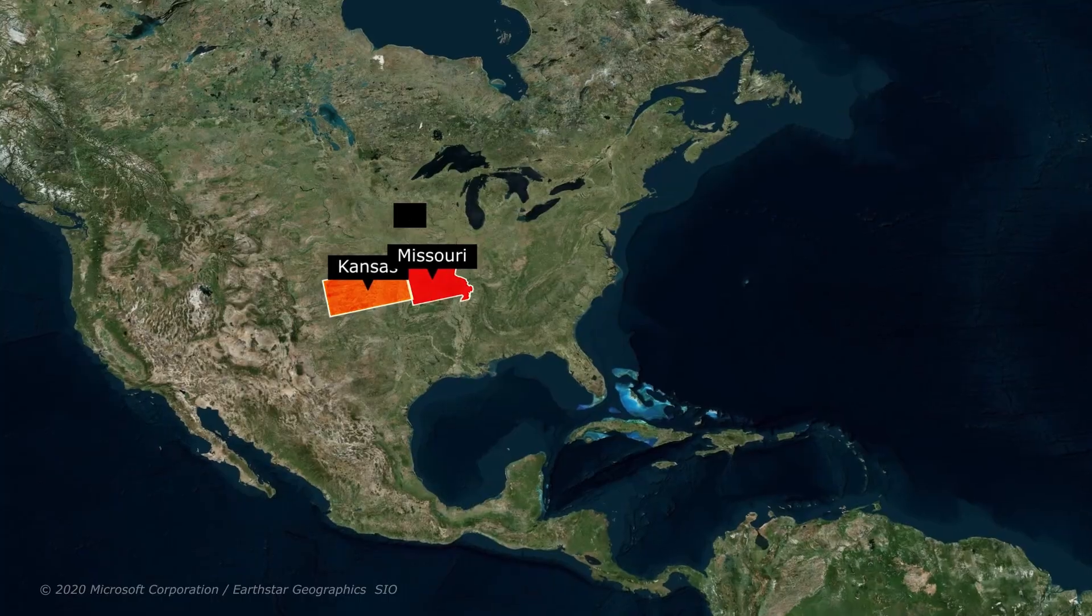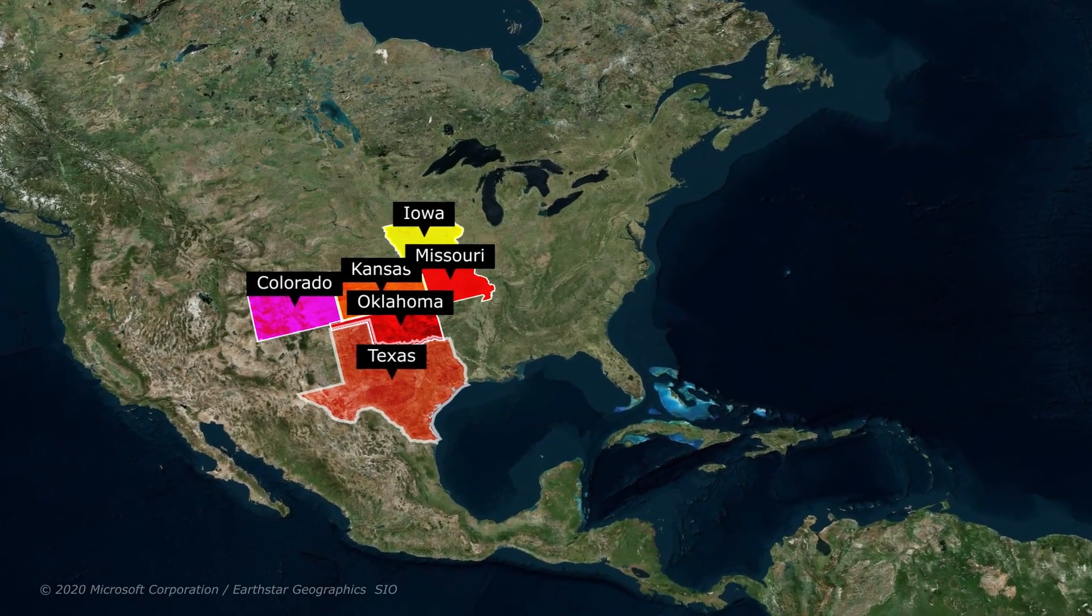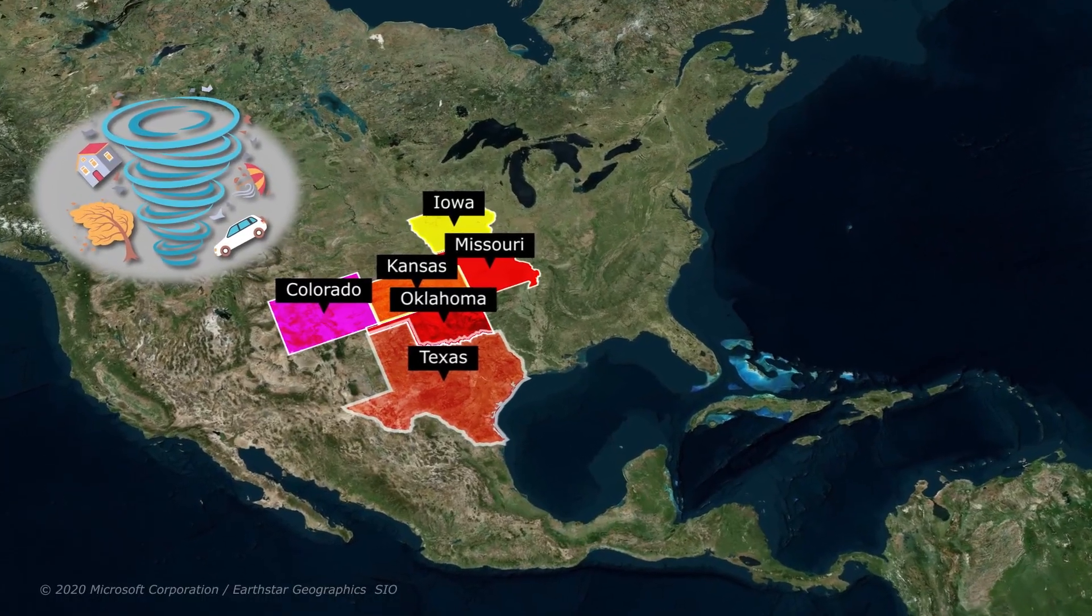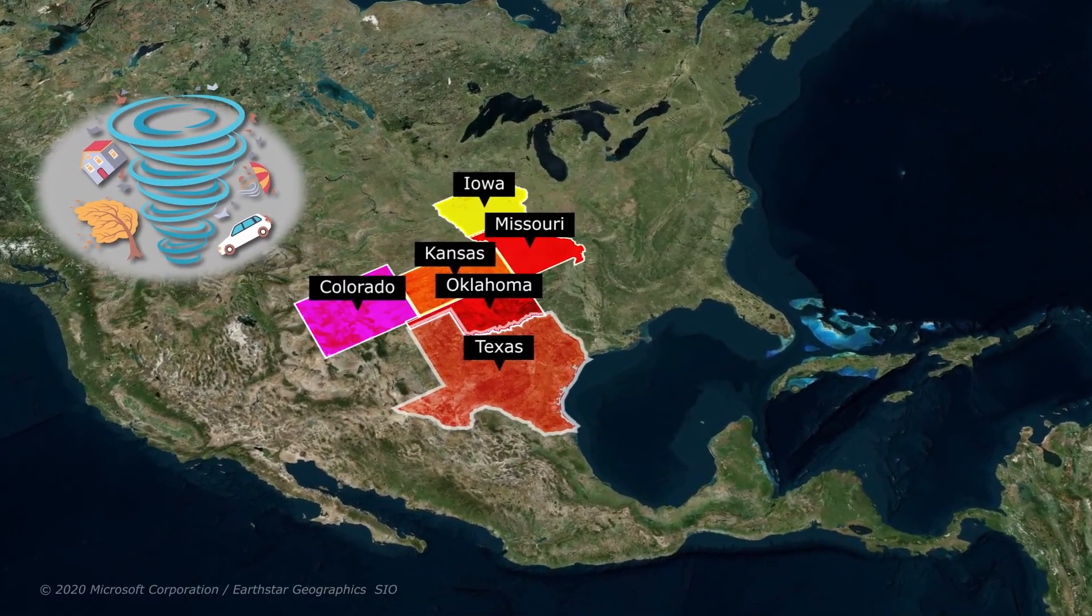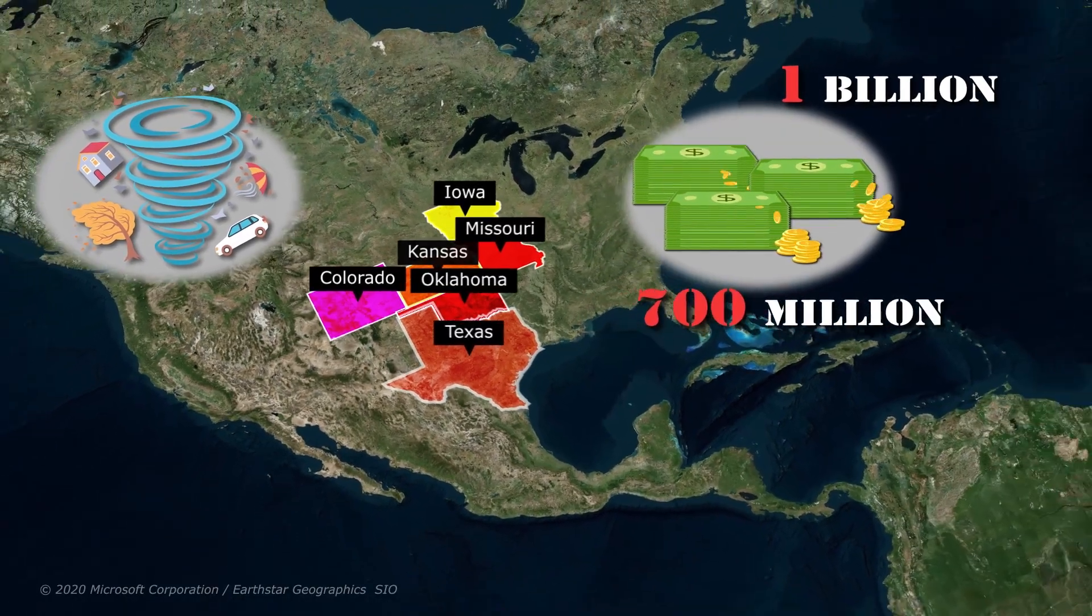States such as Kansas, Missouri, Iowa, Oklahoma, Colorado, and Texas are especially vulnerable to tornadoes. The damage caused by tornadoes in these areas alone can range anywhere from $700 million to over a billion dollars per year.